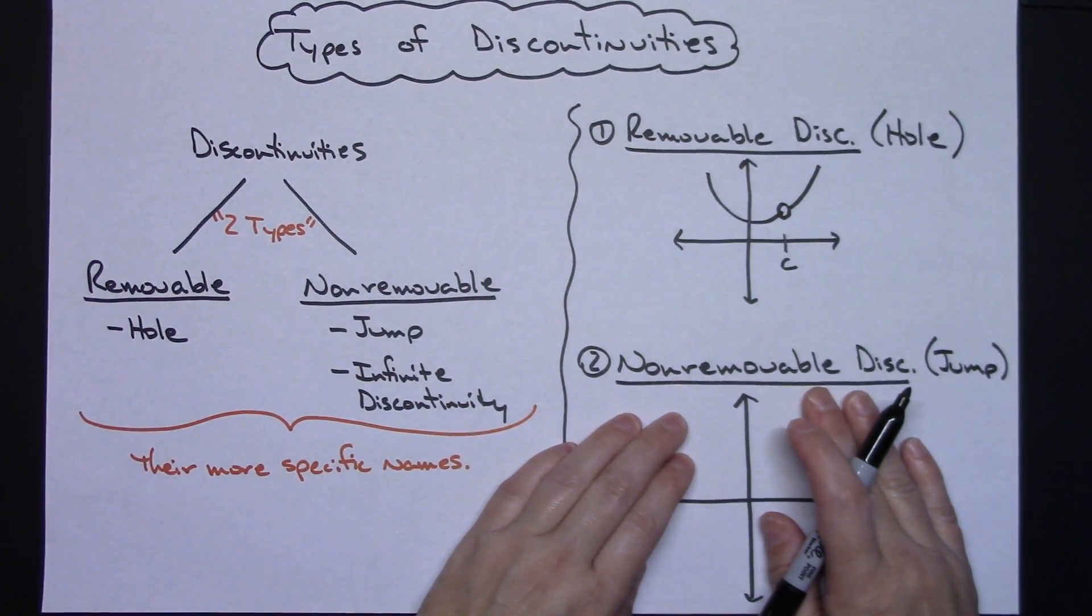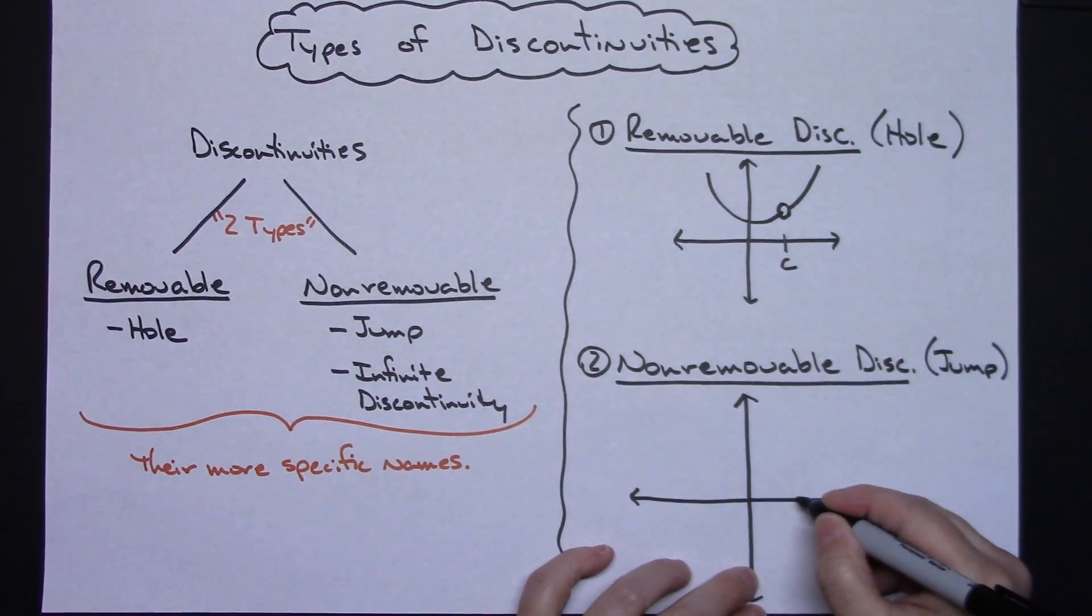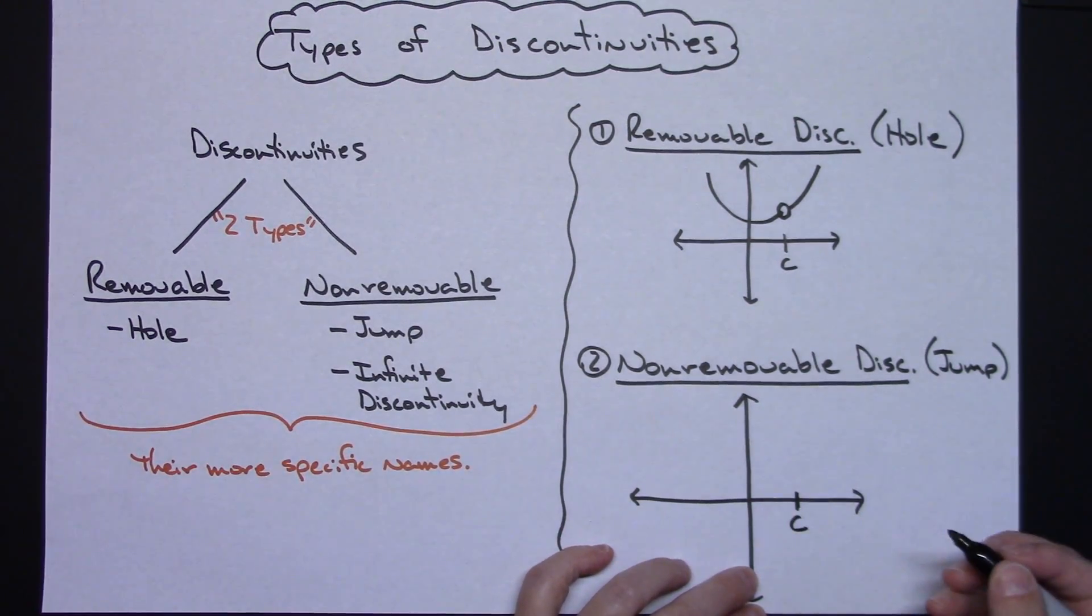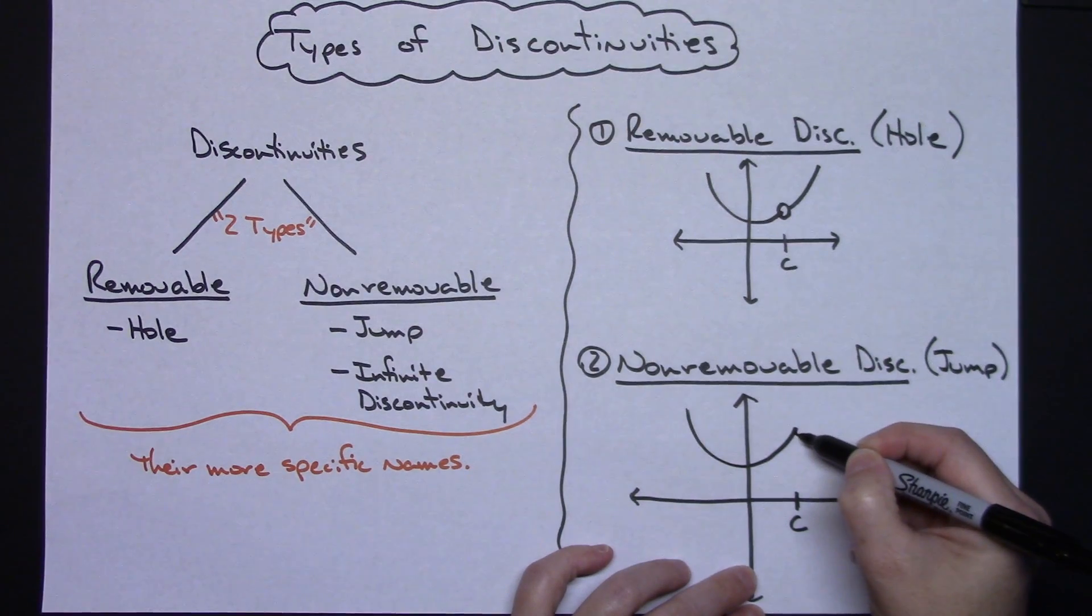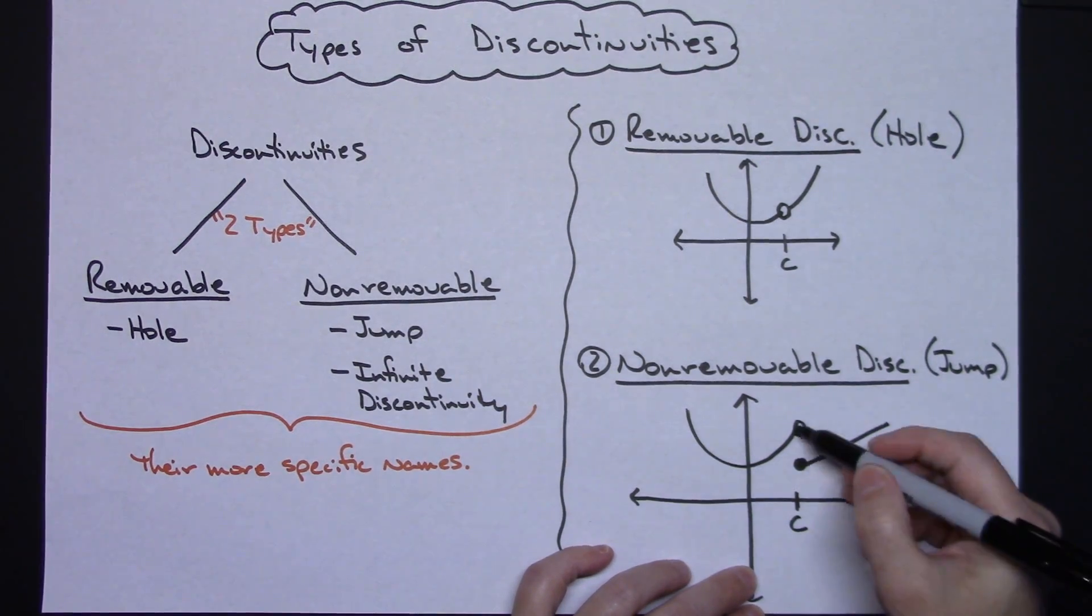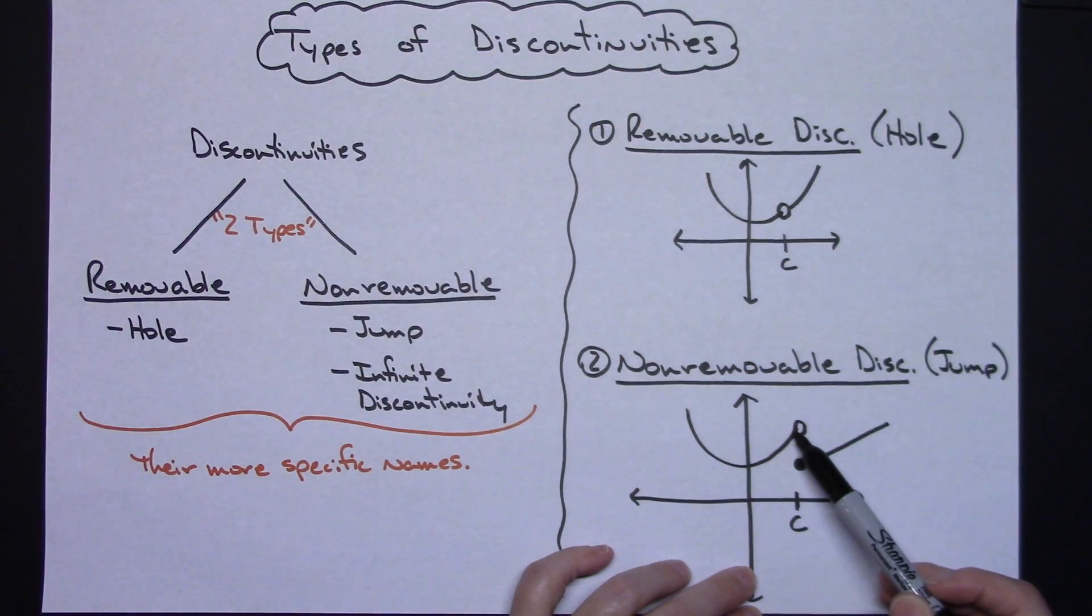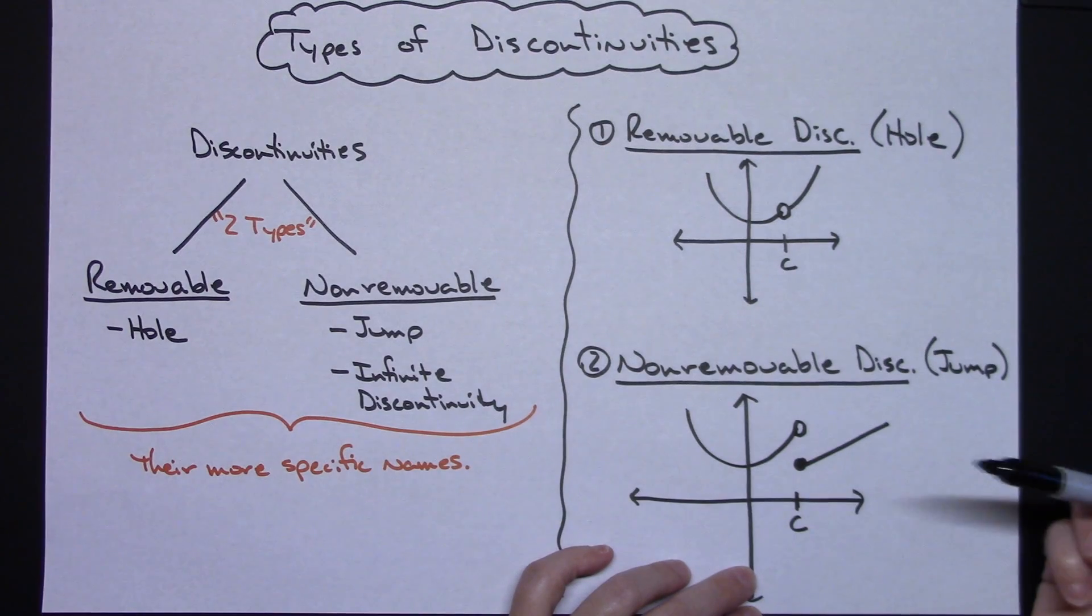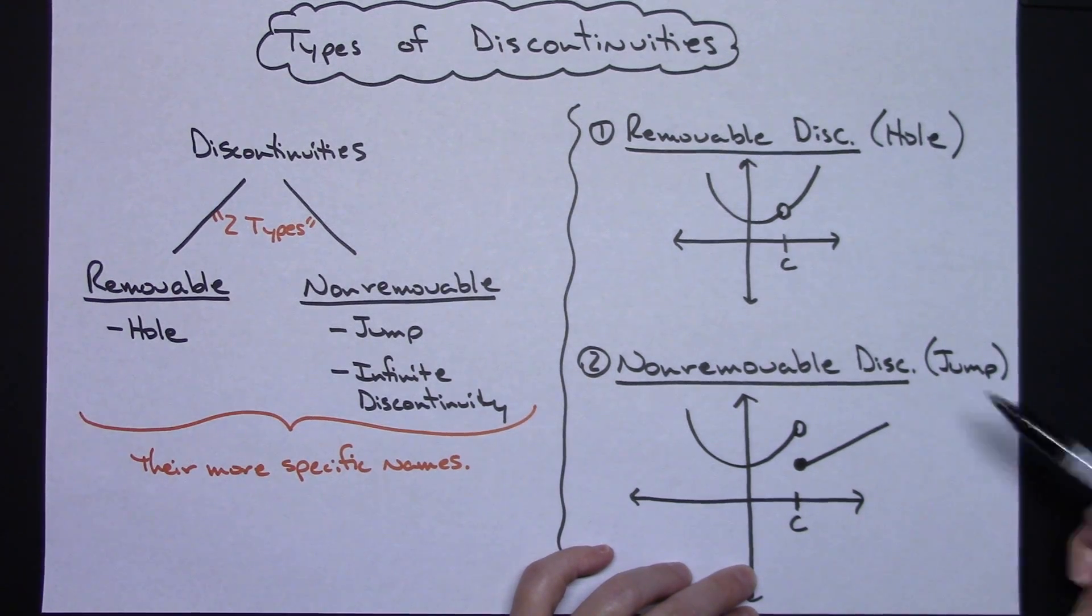For the non-removable discontinuity that is a jump, that one's pretty straightforward. Let's say I have this jump, and it's occurring at x equals c. What's going to happen is you might have part of a graph coming along here, maybe an open dot there, and then maybe something like this. This is a jump. Something to note here is that both the limits from the left and the right exist, so coming in from the left my limit exists, coming in from the right my limit exists. However, those two limits are not equal to each other, so therefore you have a non-removable discontinuity that is a jump.